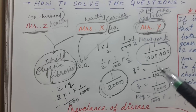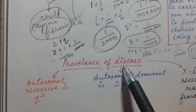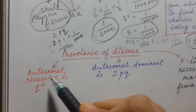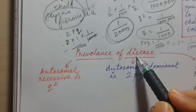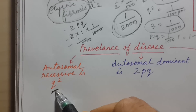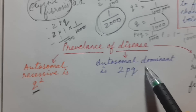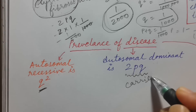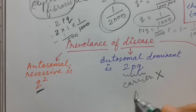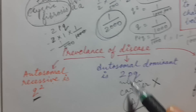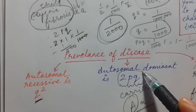Almost 90% of the time you will get this similar kind of scenario. Now let's look at the exceptions or less frequently asked questions. For autosomal recessive disease, prevalence is always q². If they mention an autosomal dominant disease in the vignette — which will be very rare — the prevalence of disease will be 2pq, because there is no concept of a carrier in autosomal dominant disease.